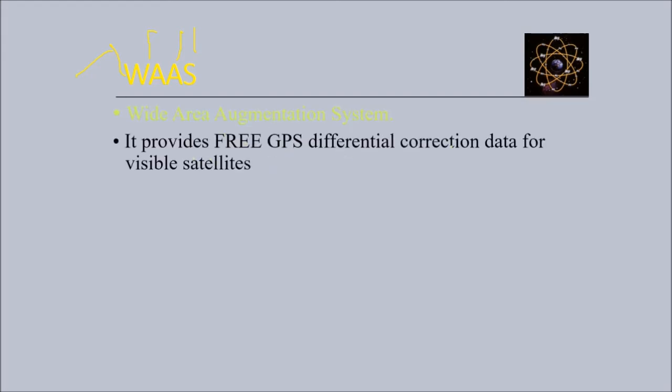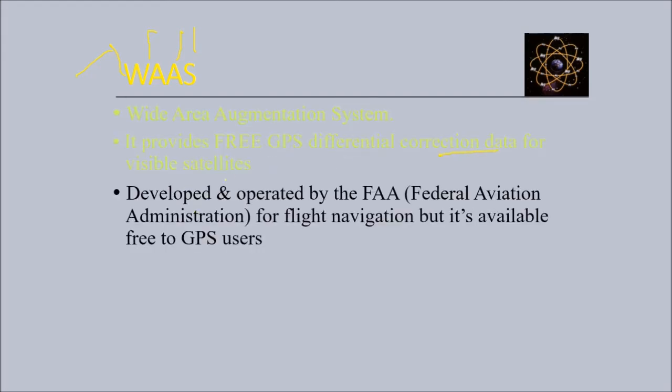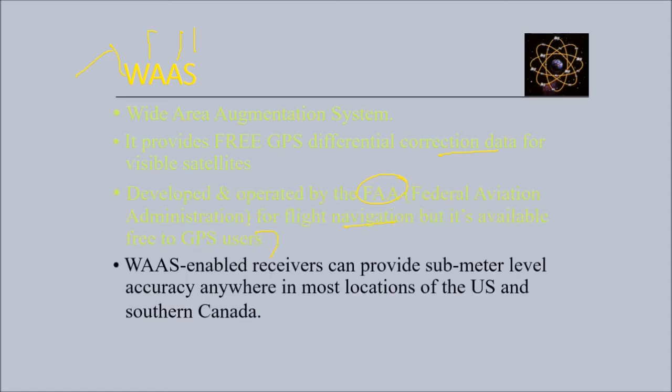Then we come to WAAS - the Wide Area Augmentation System. It provides free GPS differential correction data for visible satellites. It is developed and operated by the FAA Federal Aviation Administration for flight navigation, but it's available for GPS users free. WAAS-enabled receivers can provide sub-meter level accuracy anywhere in the US and some parts of Canada.